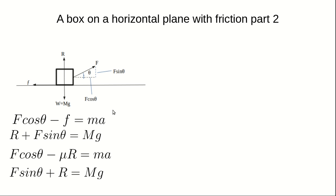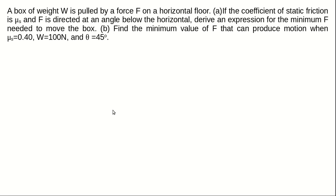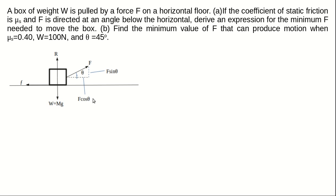Now let's look at a typical example. A box of weight W is pulled by a force on the horizontal floor. The coefficient of static friction is μs, and F is directed at an angle θ below the horizontal. Derive an expression for the minimum F needed to move the box. The diagram shows: frictional force, reaction R, weight W, F cosθ, and F sinθ.